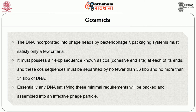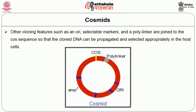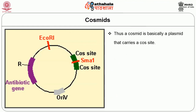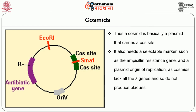Essentially, any DNA satisfying the minimal requirements — possessing a 14 bp cohesive end sequence (cos sequence) at each end, separated by no fewer than 36 kb and no more than 51 kb of DNA — will be packed and assembled into an infective phage particle. Other cloning features such as ORI, selectable markers, and a polylinker are joined to the cos sequence so the cloned DNA can be propagated in the host cell. A cosmid is basically a plasmid carrying a cos site, also needing a selectable marker such as the ampicillin resistance gene and a plasmid origin of replication. Since cosmids lack all phage genes, they do not produce plaques — instead, colonies are formed on selective media just as with plasmid vectors.